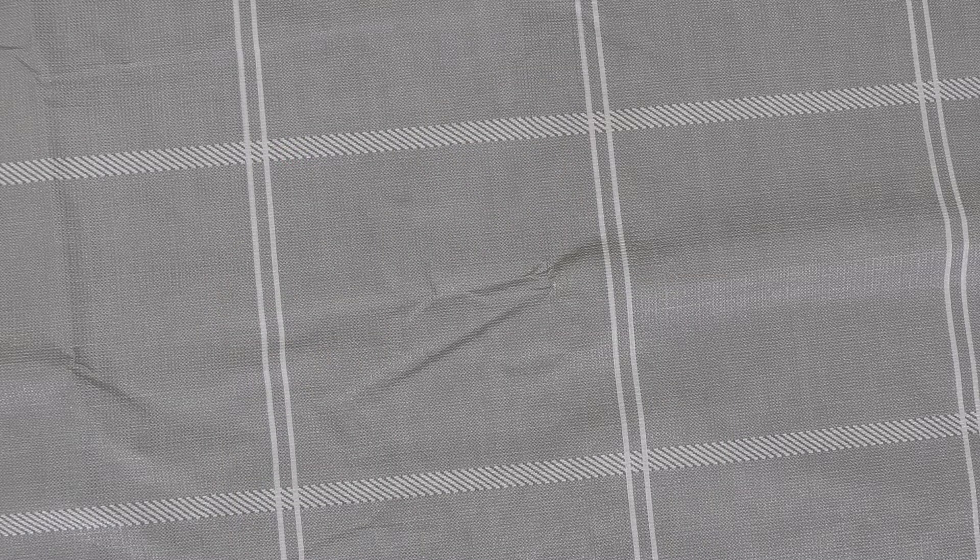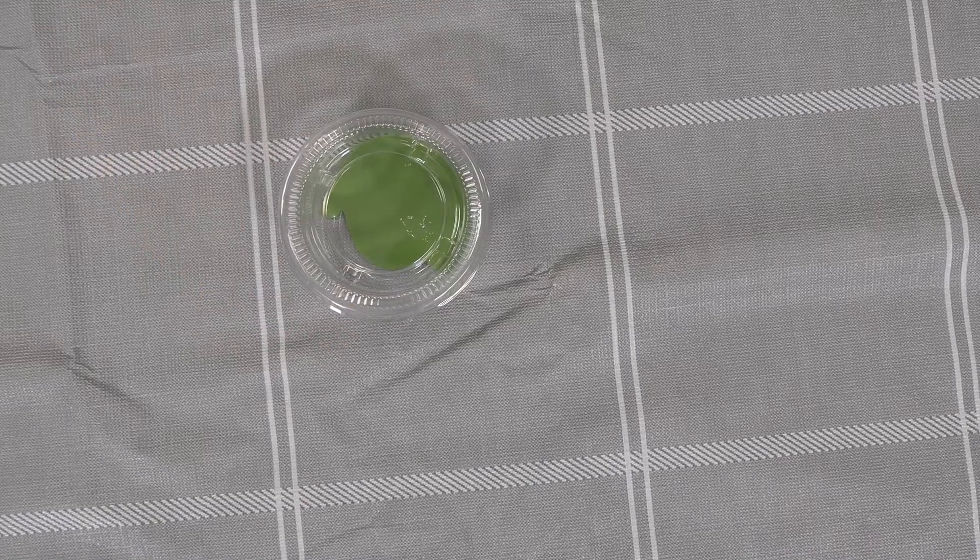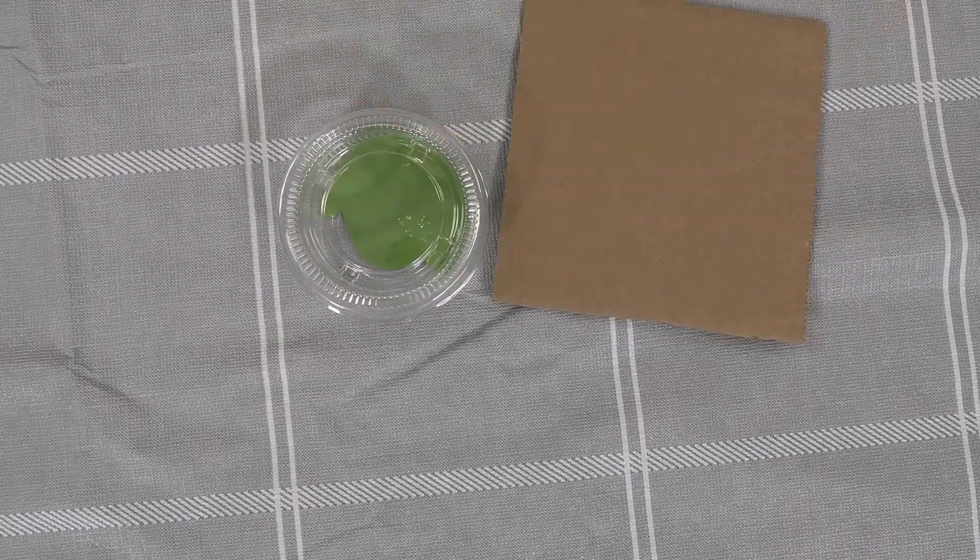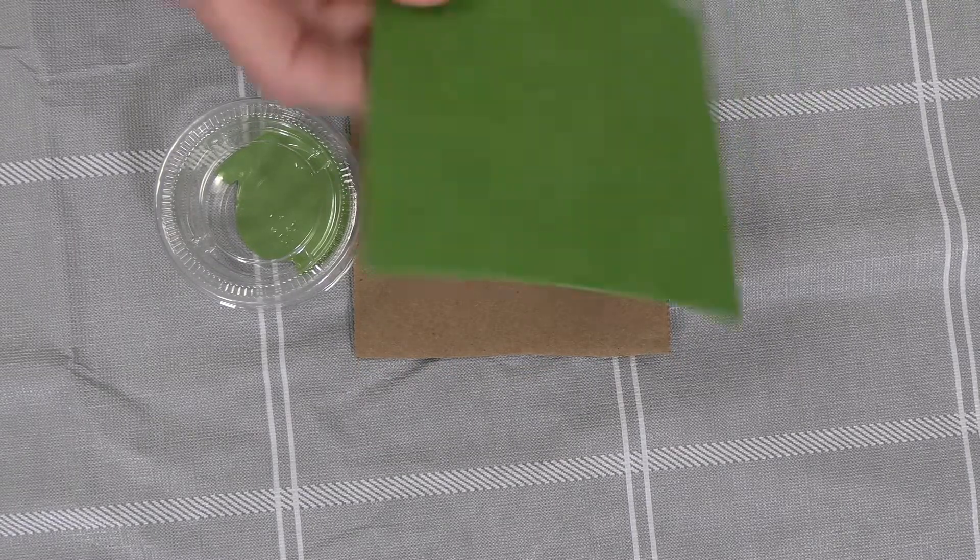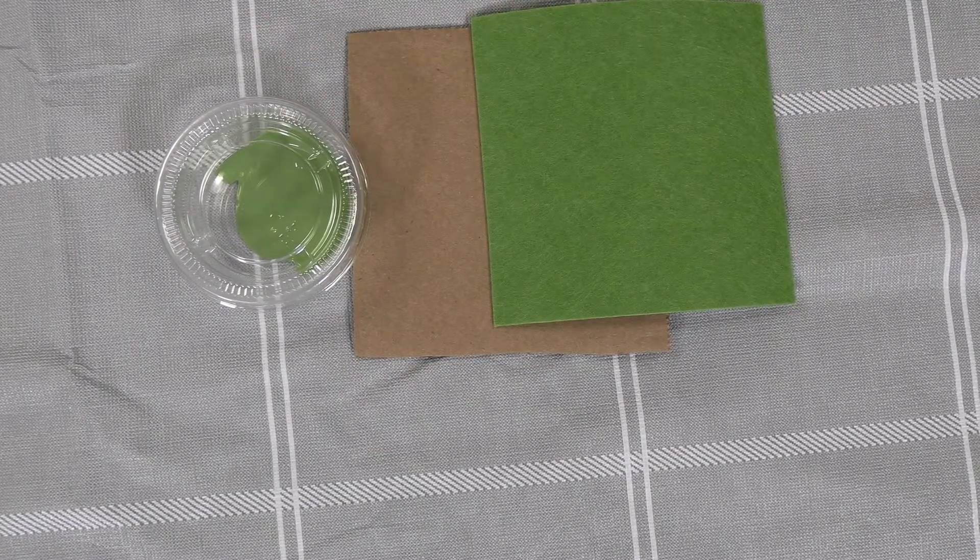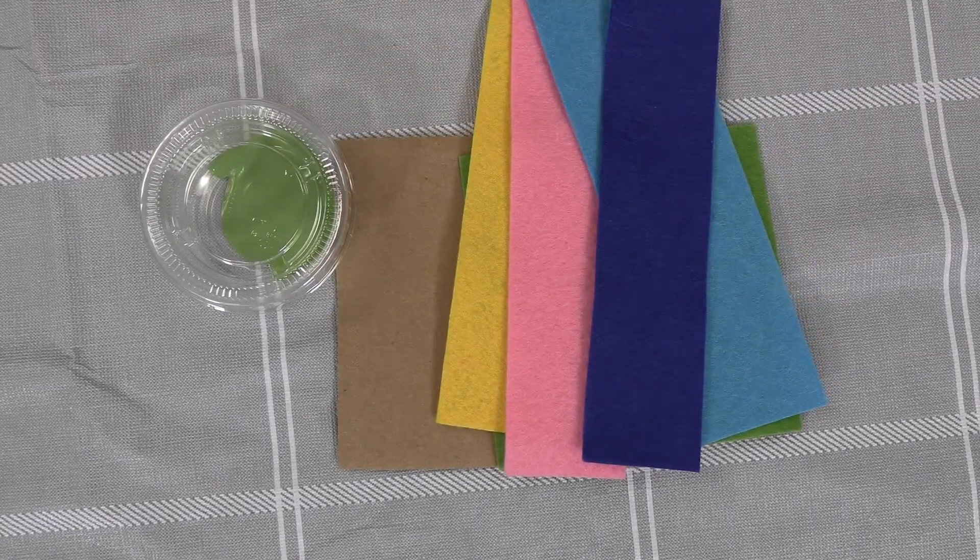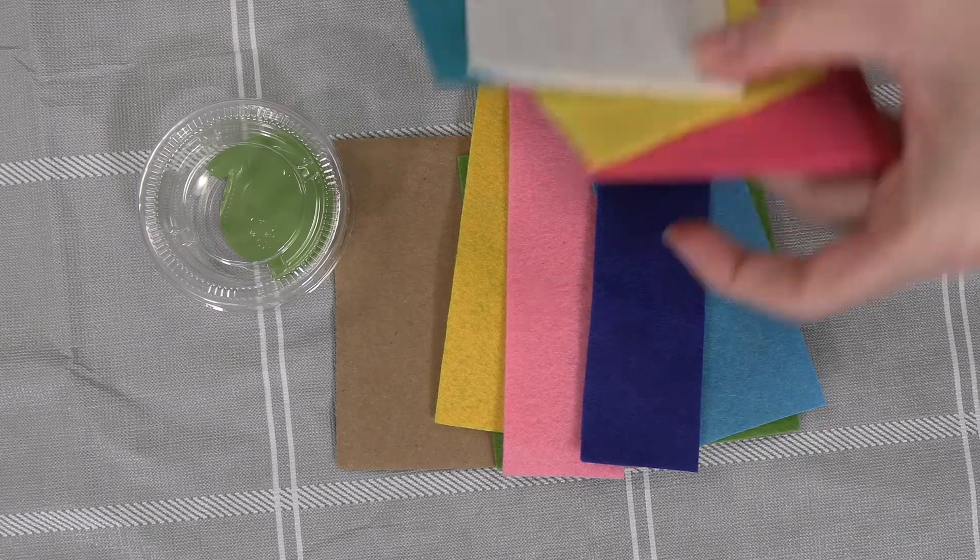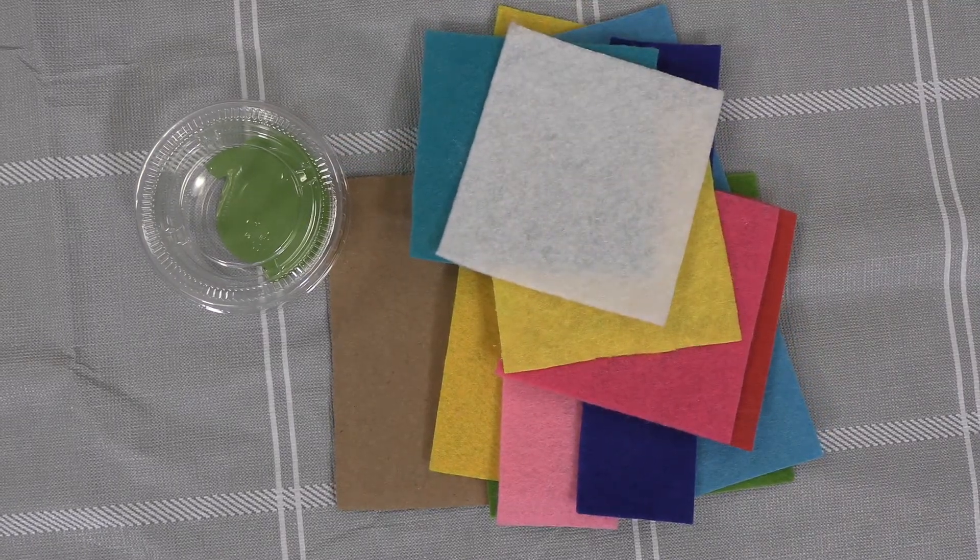Here is what is in your kit that you receive from the library: green paint in a little tub, a piece of cardboard, green felt, and a variety of sizes of other felts. Some are long and rectangular, others are square.